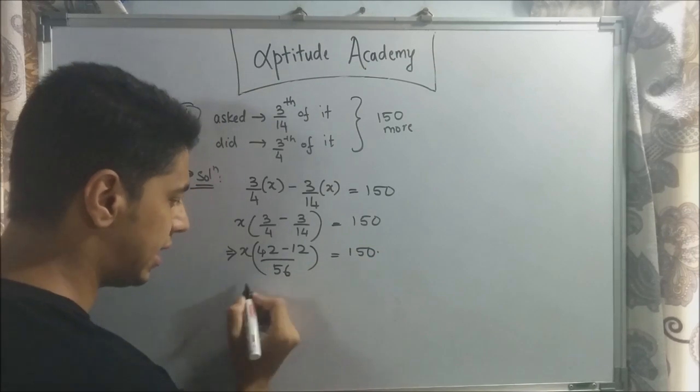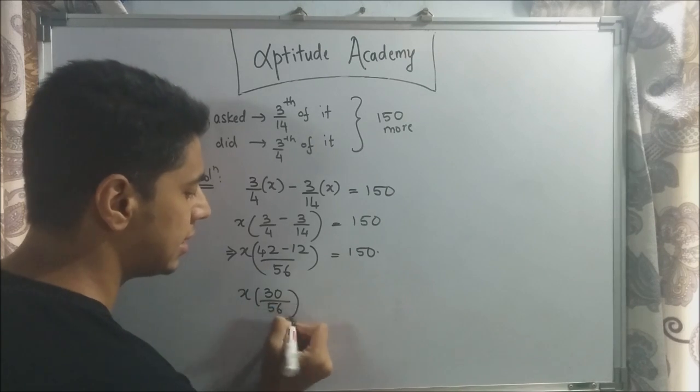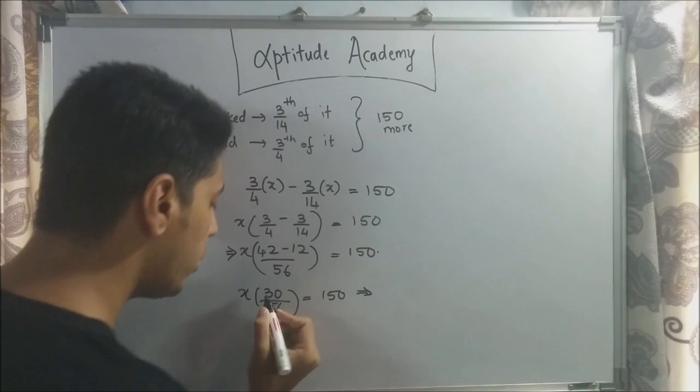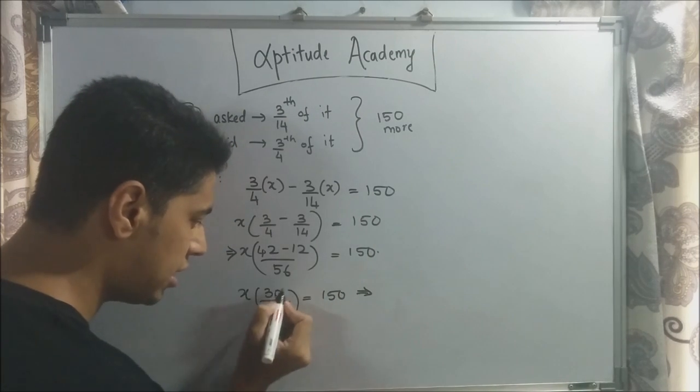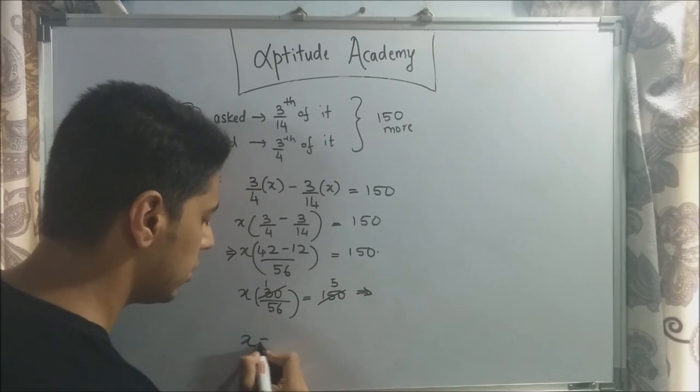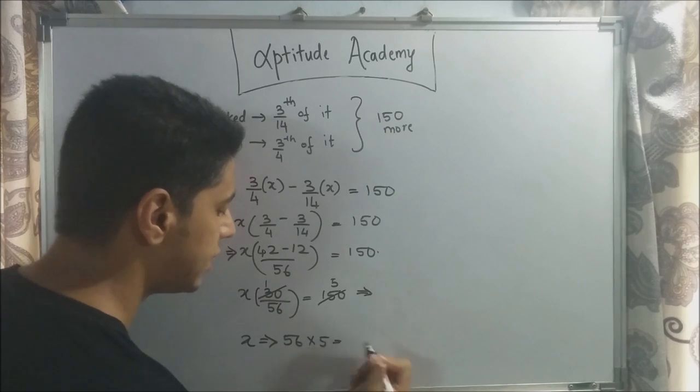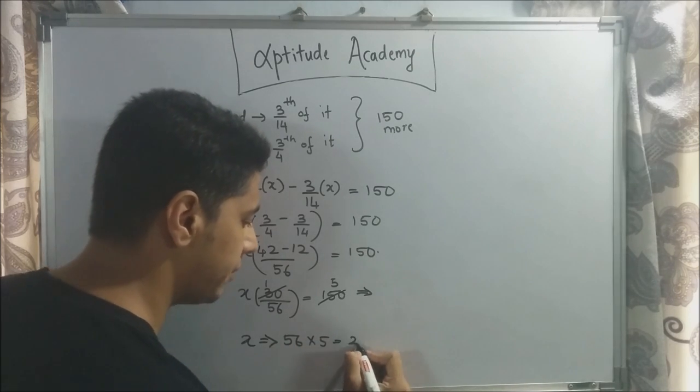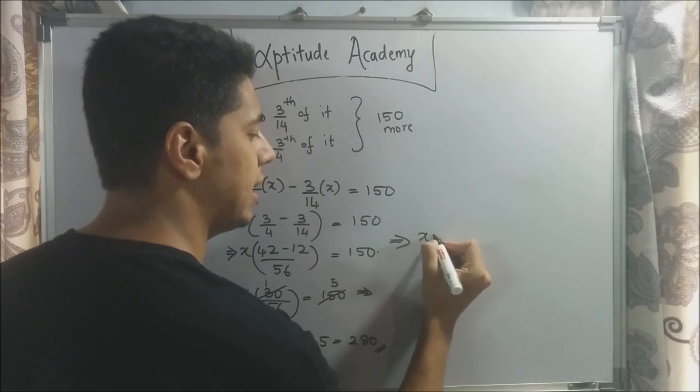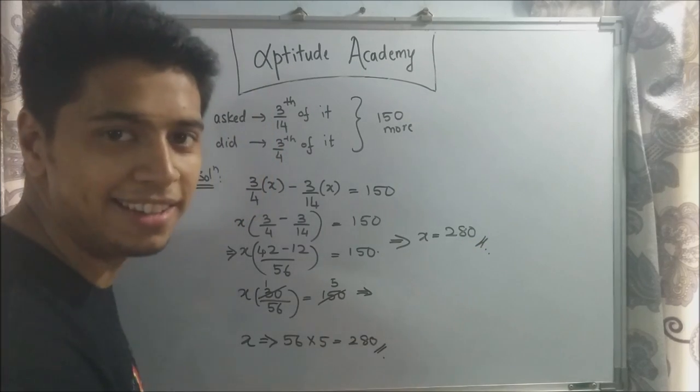Now, what you can do is 30 and 150 is here. So 3 fives are, so x will be equal to 56 into 5. 56 into 5, 280. So implies your final answer, x, will be 280. Easy, right?